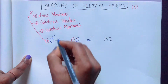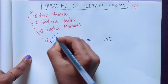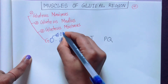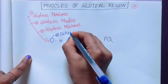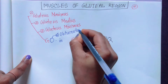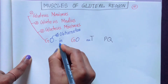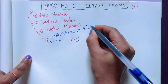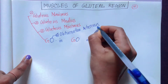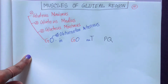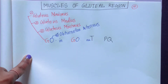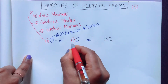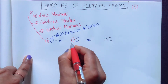Then O in — this O is for obturator internus. That is muscle number four.